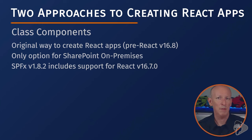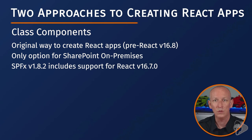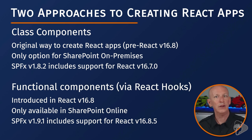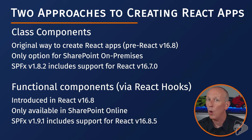As a React developer, you can build React applications two ways: using functional components or class components, and you can even mix and match them, which is handy when migrating an existing app to the newer style. Class components were the original method and existed prior to React version 16.8 — they are the only option for SharePoint Server on-premises deployments. SharePoint Framework version 1.8.2 supports React 16.7, so if you're on that version or earlier, you can only use class components. React 16.8 introduced hooks and functional components, and SharePoint Framework version 1.9.1 introduced support for React 16.8 — but this is only available in SharePoint Online.